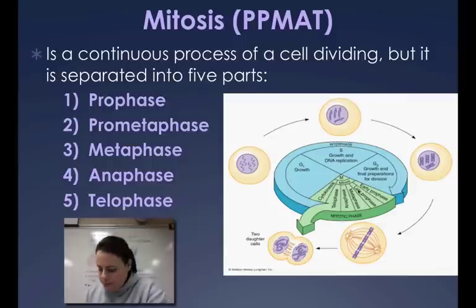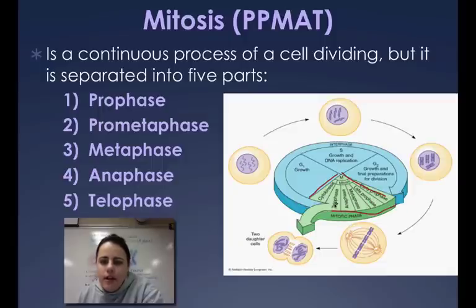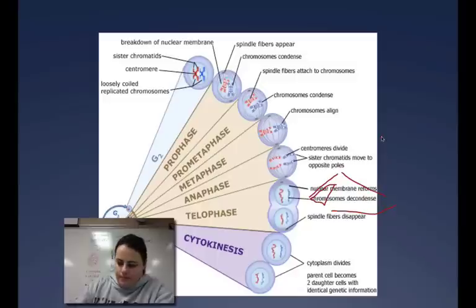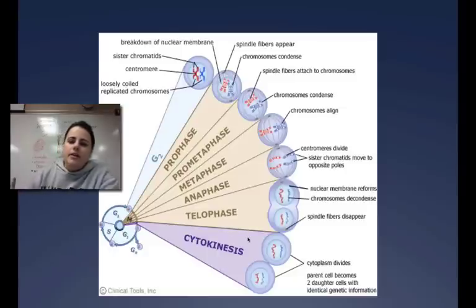Looking at the picture, this green section is M-phase, which includes mitosis and then cytokinesis at the end. Everything in the blue was interphase that we looked at. Zooming in, we're going to start right after G2, the last part of interphase, and go into mitosis: prophase, prometaphase, metaphase, anaphase, telophase, and the last part of M-phase, cytokinesis.